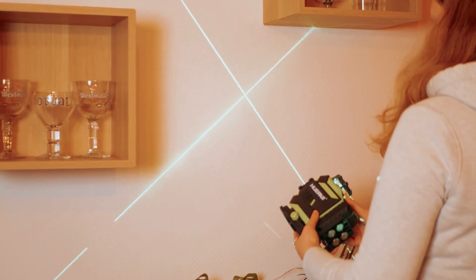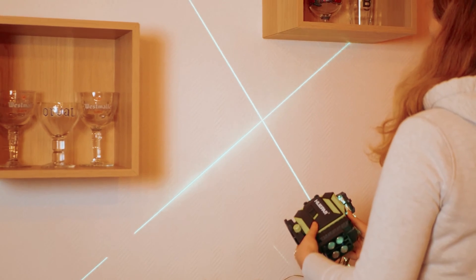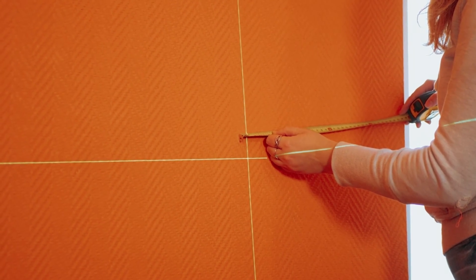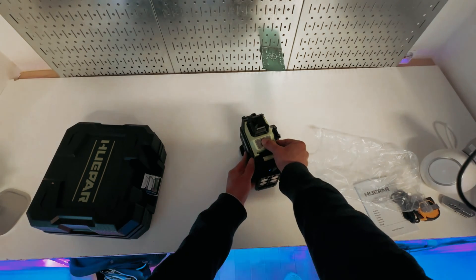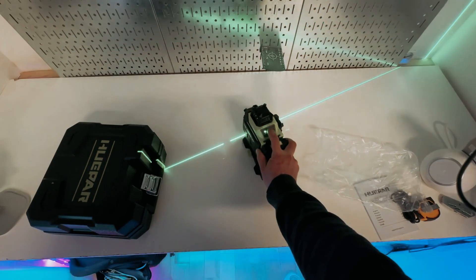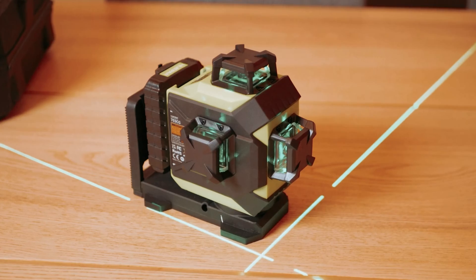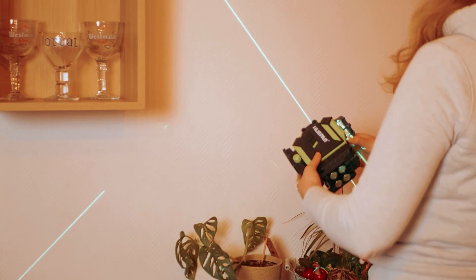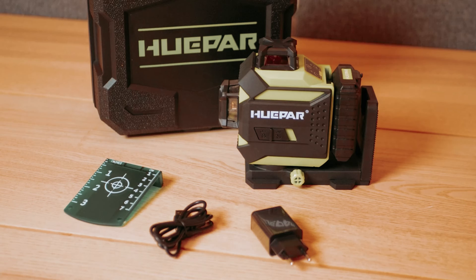Whether you are working on construction, carpentry, tiling, or any other project that requires precise leveling and alignment, the HUEPAR 360 Laser Level is a reliable tool that will help you get the job done efficiently. With its advanced features and high-quality construction, this laser level is a must-have for any professional or DIY enthusiast seeking accurate and reliable measurements.